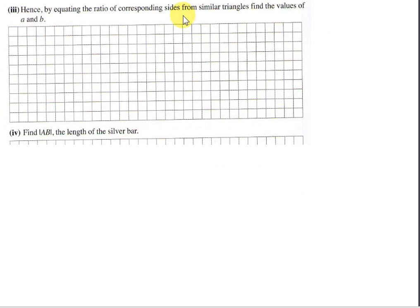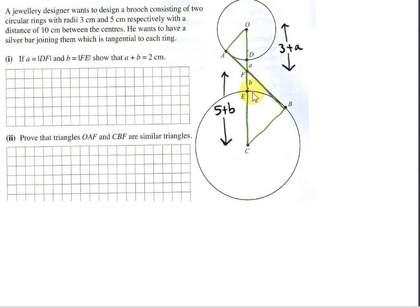By equating the ratio of corresponding sides from similar triangles, find the values of A and B. Let's get the corresponding sides of these two triangles. Let's look at the sides opposite the 90 degree angles. The side opposite the 90 degree angle in the small triangle is 3 plus A, because the distance of O to D is the radius of this circle which is 3, and we have to add on A. The side opposite the right angle here is equal to the radius of this big circle which is 5, plus this distance B. So it's 5 plus B.